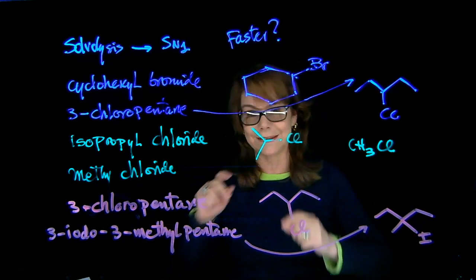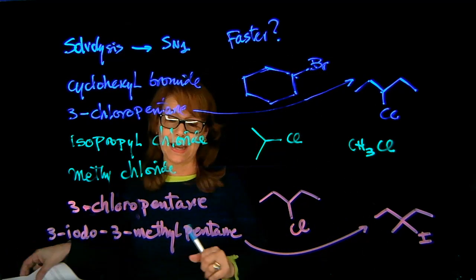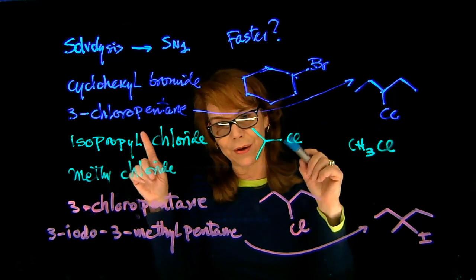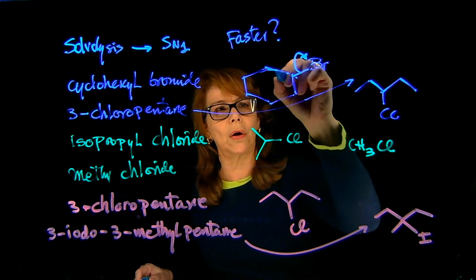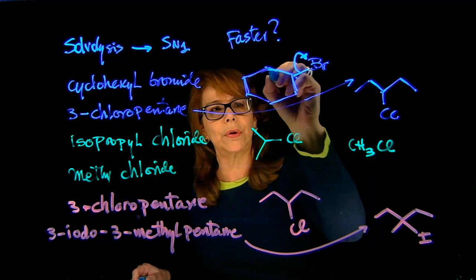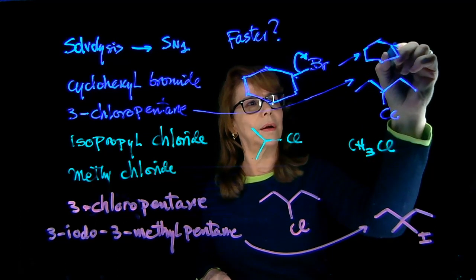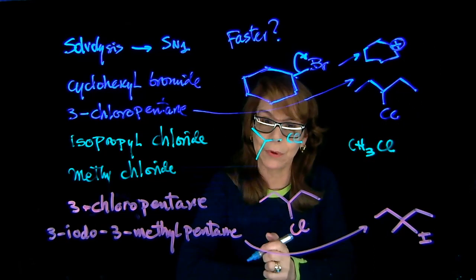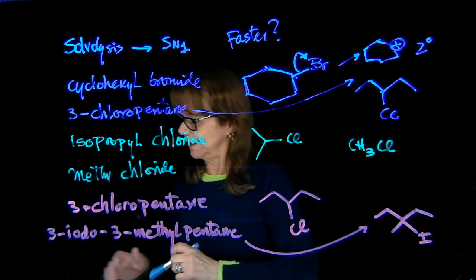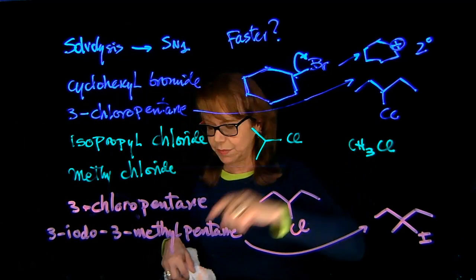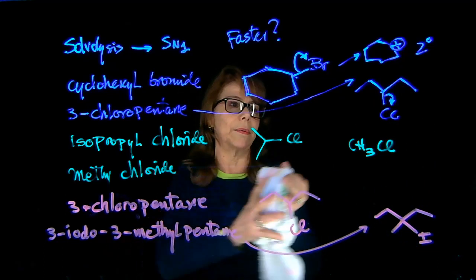Now we analyze the loss of the leaving group. I'm going to draw the carbocation for all of them. If bromide departs from cyclohexyl bromide, you form the corresponding carbocation — that carbocation is secondary. Now erasing the chlorine from 3-chloropentane and applying the same mechanism: that bond breaks and we get the resulting carbocation.